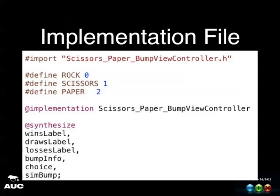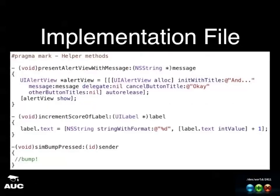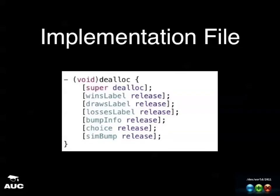In the implementation file, define values for rock, scissors, and paper to make the logic easier, then synthesize all the properties: winsLabel, drawsLabel, lossesLabel, bumpInfo, choice, and simBump. Then create three helper methods: one for displaying an alert view showing win, loss, or draw; one called incrementScoreOfLabel to update the score labels; and the simBumpPressed method — for now just comment it out with a placeholder, as we'll add the bump simulation once the API is integrated.